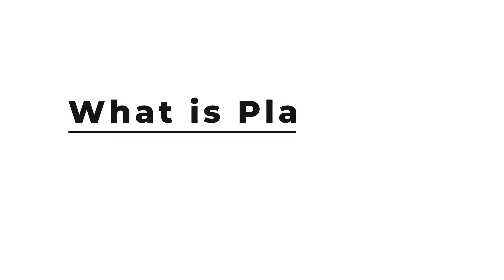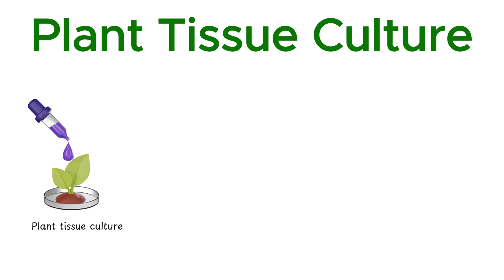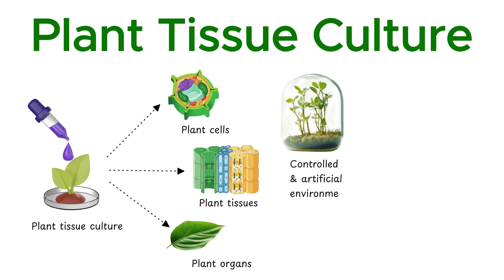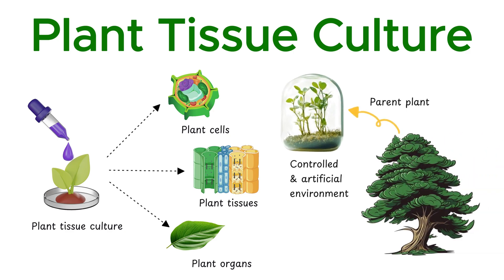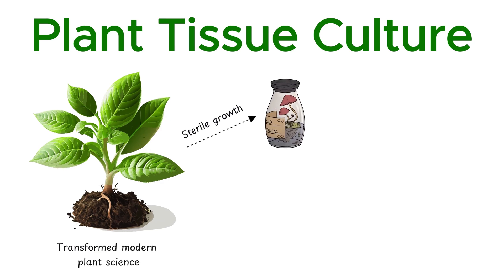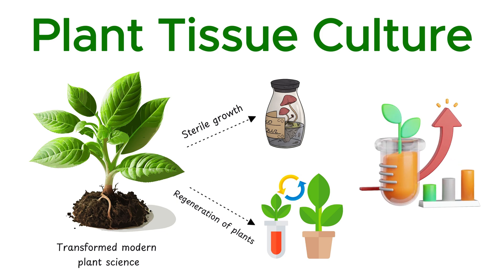So, what is plant tissue culture? Plant tissue culture is a cutting-edge technique used to cultivate plant cells, tissues, or even entire organs in a meticulously controlled and artificial environment outside their parent organism. It is also known as micropropagation. This innovative method has transformed modern plant science by enabling the sterile growth and regeneration of plants, offering unparalleled precision and potential.